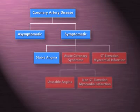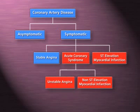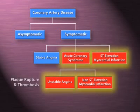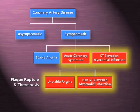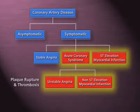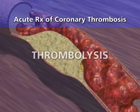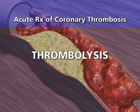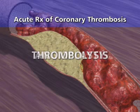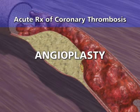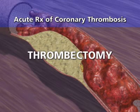Plaque rupture with coronary thrombosis is the most common cause of acute life-threatening coronary artery disease. Emergency therapy by thrombolysis, angioplasty, or thrombectomy restores blood flow by targeting the thrombus.